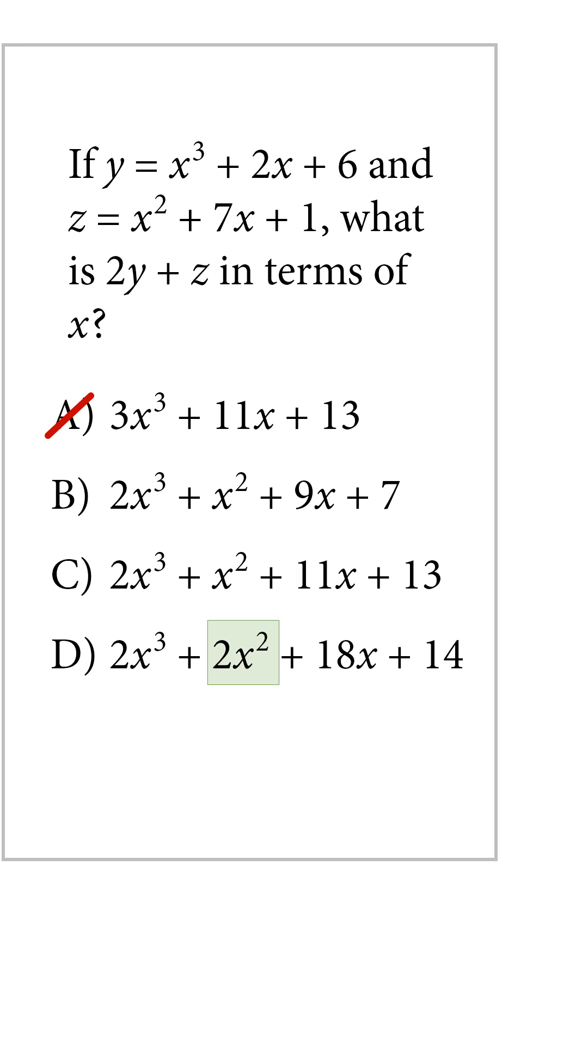Then of the remaining three answer choices, only one of them has 2x², so we eliminate this answer choice. We are down to B and C.